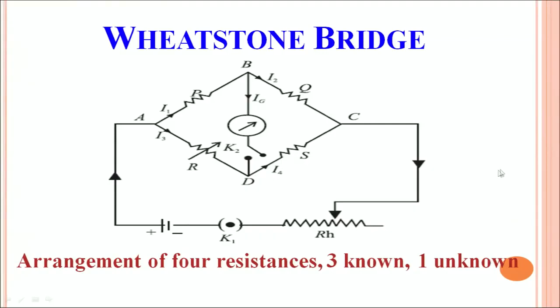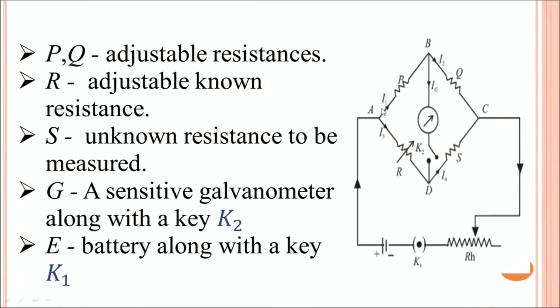This is the schematic representation of Wheatstone Bridge. As you can see here, it is an arrangement of 4 resistances P, Q, R and S. Three of them are known and 1 resistance is an unknown resistance. We can find out the unknown resistance in terms of the other 3 resistances. Now let us identify the different parts — P and Q, these are adjustable resistances.